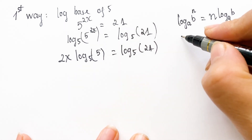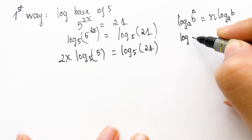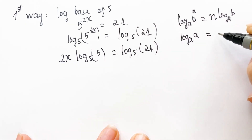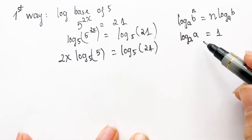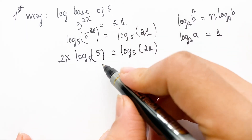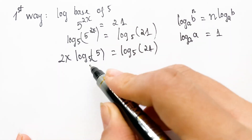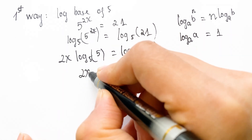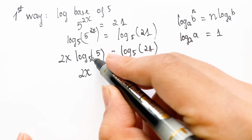Using the property that log base a of a is equal to 1, we have log base 5 of 5 is equal to 1. Therefore, we have 2x times 1.